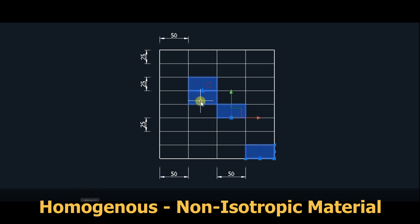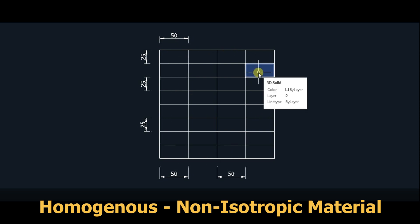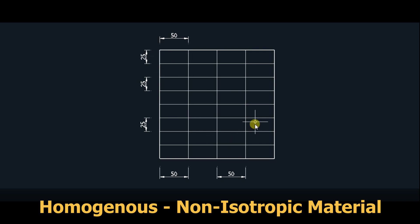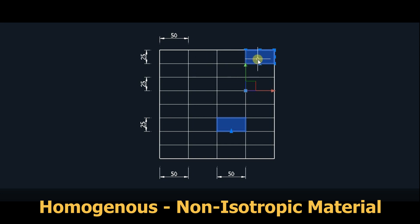If you consider an isotropic property — is it an isotropic material? No, it is not an isotropic material, because what is an isotropic material? A material should have the properties in all the directions the same. If you consider this element of the material, this is 50 and this is only 25. That means the property in this direction is not same as the property in the other direction. So the property in the two directions is not same — this is a non-isotropic material, but it is a homogeneous material. It is a homogeneous, non-isotropic material.